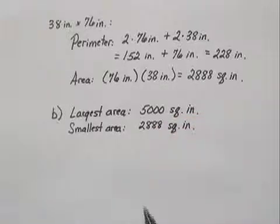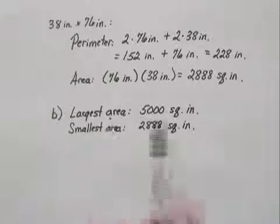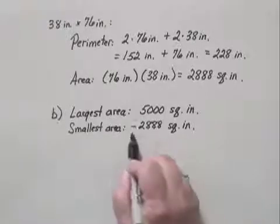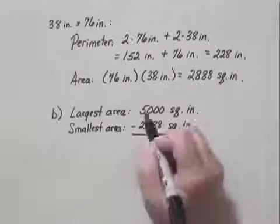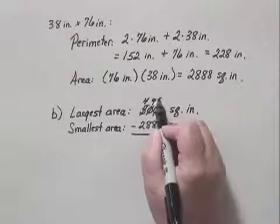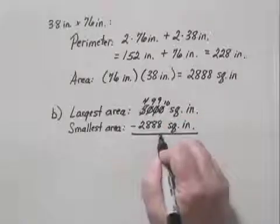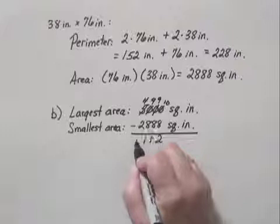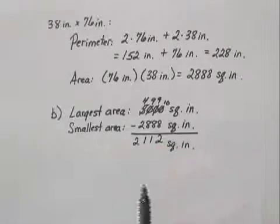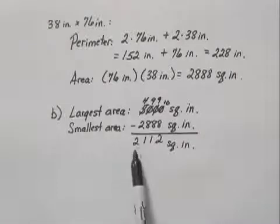To find the difference, the amount by which this exceeds this, we subtract. We have 5,000 minus 2,888. If we do the subtraction, we have 2,112 square inches. So the largest table exceeds the smallest table by 2,112 square inches.